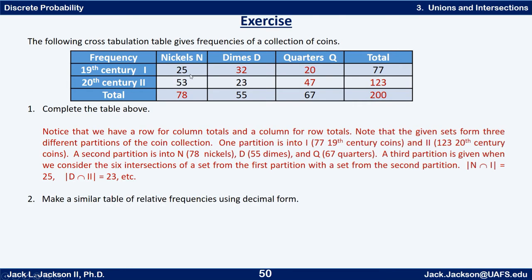We can fill it out. If there are 25 nickels from the 19th century and 53 from the 20th, that makes 78 nickels altogether. If there are 55 total dimes and 23 in the 20th century, we subtract to get 32 dimes from the 19th century. Taking 78 plus 55 plus 76 gives us 200 coins altogether. The 77 minus 32 minus 25 gives us 20, and then 67 minus 20 gives 47. Adding those three together gives 123, and these two add to 200.